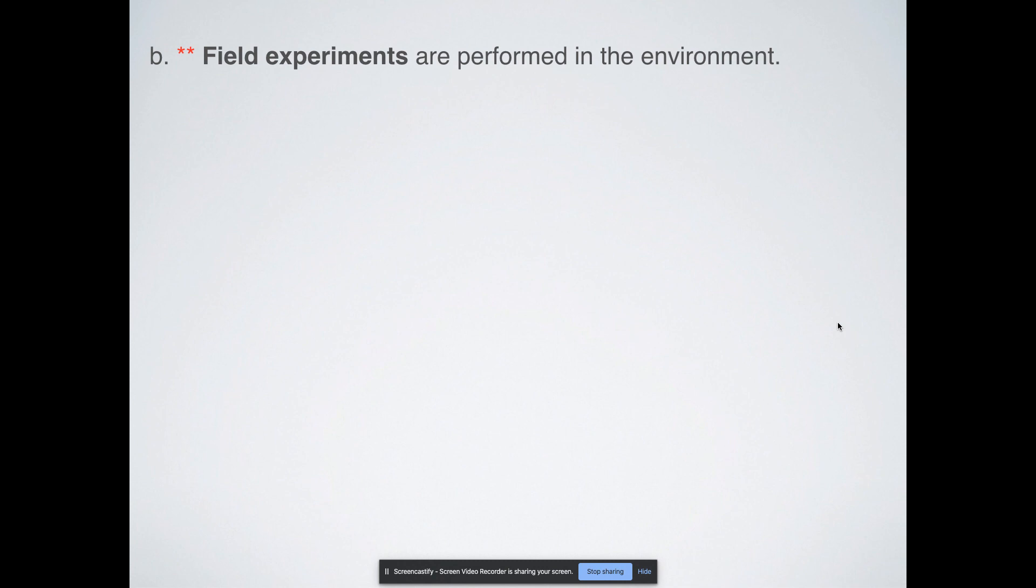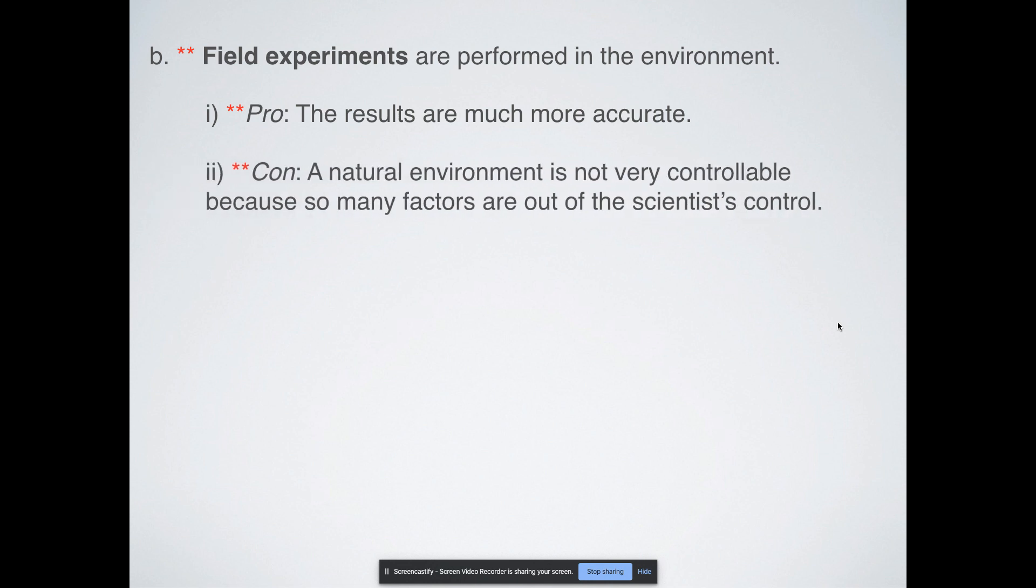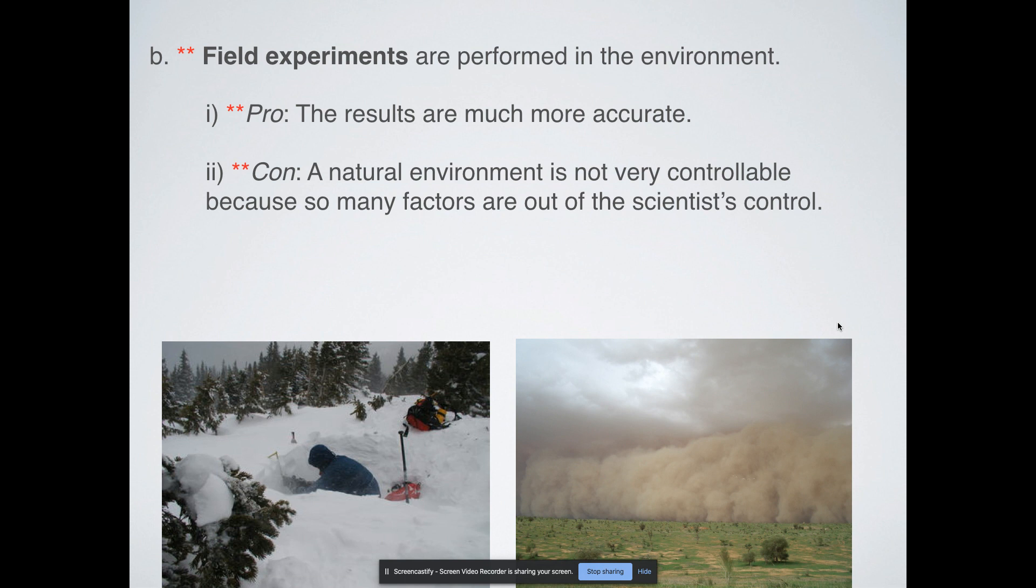We have field experiments. Those are like surveys and stuff too. Field experiments are experiments that you perform in the actual environment. And so your results there are normally way more accurate. But it's a natural environment, so not only is it a pro, but it's also a con. You can't control everything. There are so many factors that are out of your control. Your equipment could get destroyed, there could be a horrible snowstorm and all of your data ends up getting erased or destroyed. You could have gigantic natural phenomena, like a giant sandstorm that makes it impossible for you to collect your data.